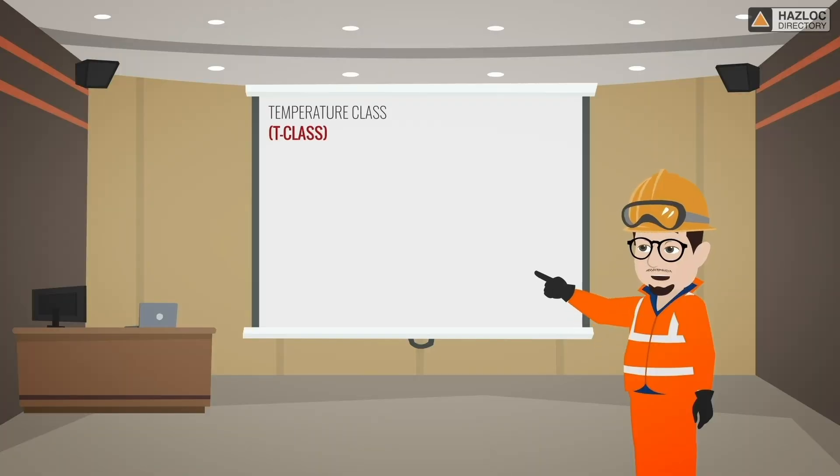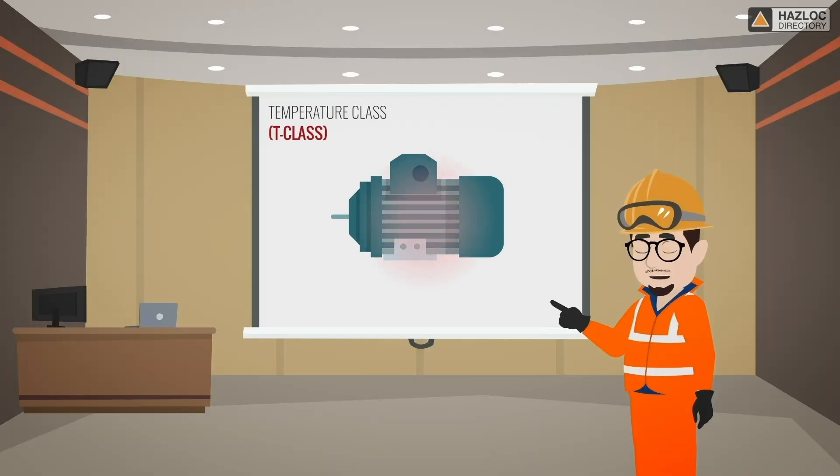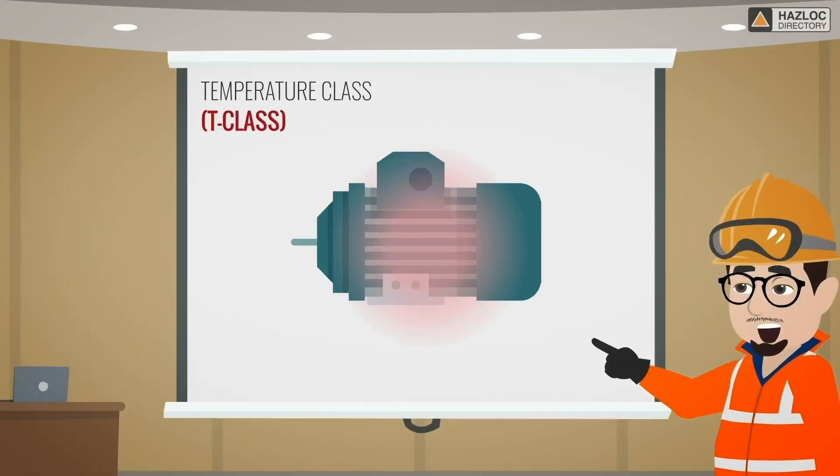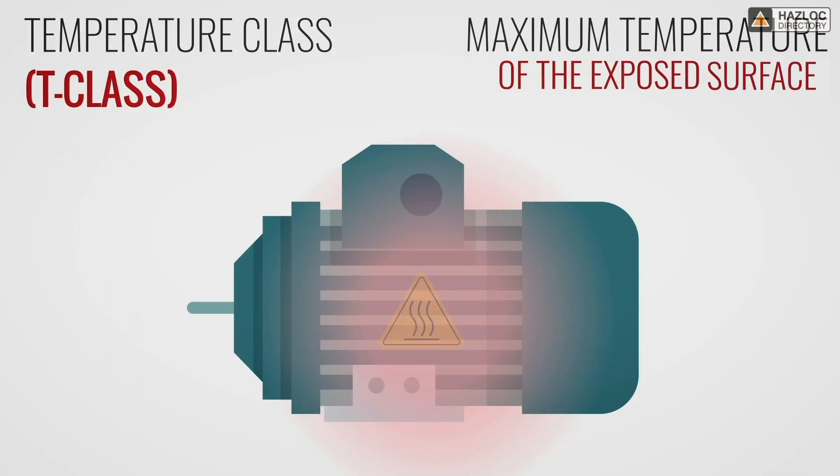Temperature class, known as T-class, is one of the characteristics used to classify an electrical device so it may be safely installed in a hazardous location. It is the maximum temperature of the exposed surface of the electrical apparatus based on the ambient temperature range allocated for that device.